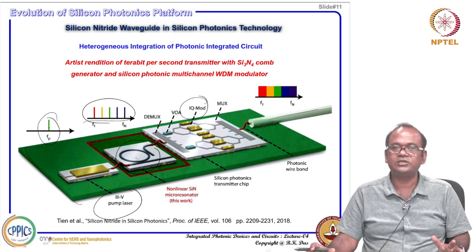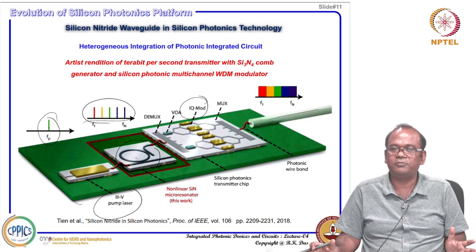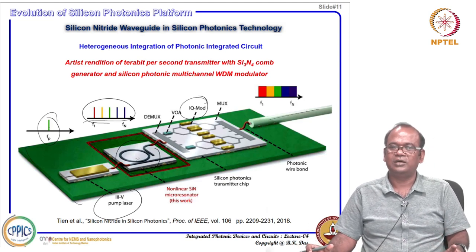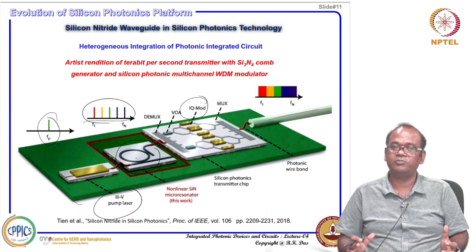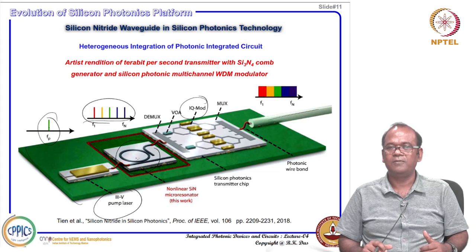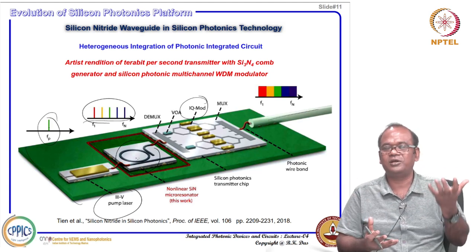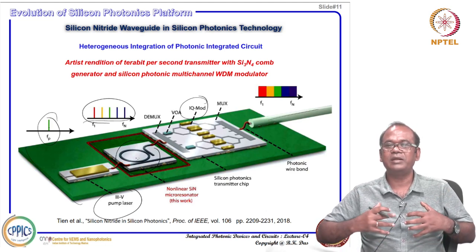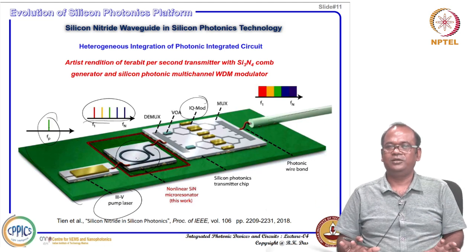So with this I have given the technology aspects of the silicon photonics platform — how it has progressed — at a high level. Different technologies are still growing and improving. In the next lecture, I will enter into the actual properties: waveguide devices, ring resonators, Mach-Zehnder modulators — how they work, their figures of merit, and how to improve their design. Some theoretical aspects will be covered in the next lectures.